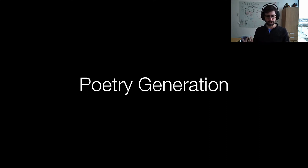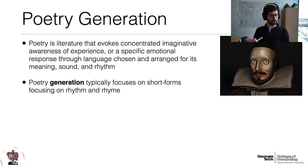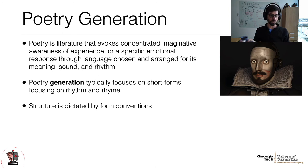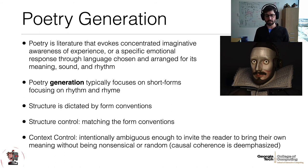Now I'll switch to poetry generation — similar in some ways but different. Poetry is really about creating imaginative awareness, invoking feelings in users through patterns of rhythm, rhyme, inflection, syllables, and structure. Poetry generation has focused on short-form poems with different patterns of rhythm and rhyme. Structure is dictated by form conventions of different types of poems, so poetry focuses a lot on structure control — making sure rhyme and rhythm happen. It also de-emphasizes context; ambiguity is intentionally good, and causal coherence so important to stories is really not important here at all.